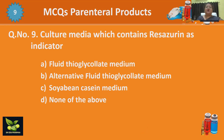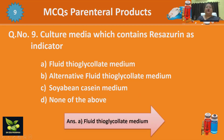Next question: which culture media contains resazurin as an indicator? In sterility testing, we study three types of culture media: fluid thioglycolate medium, alternative fluid thioglycolate medium, and soybean casein digest medium. Resazurin is an oxidation-reduction indicator present in fluid thioglycolate medium only — it is not present in the alternative or soybean casein digest medium.